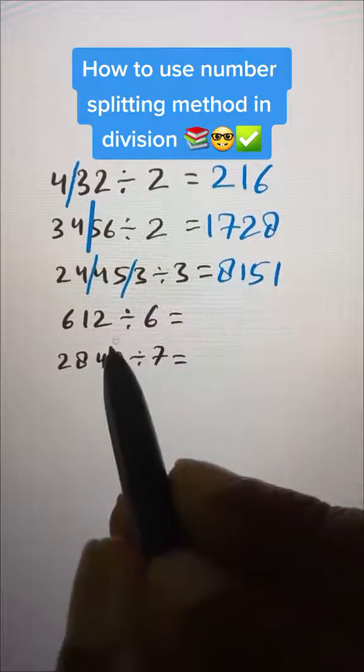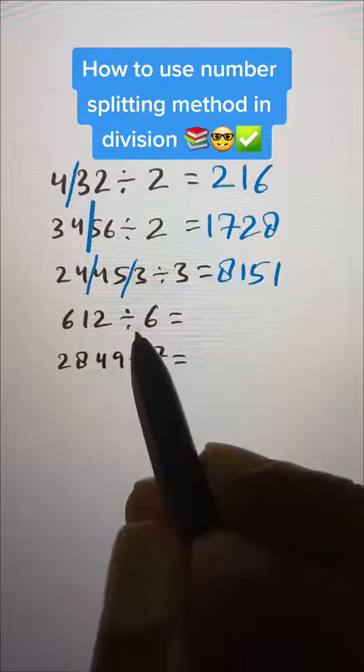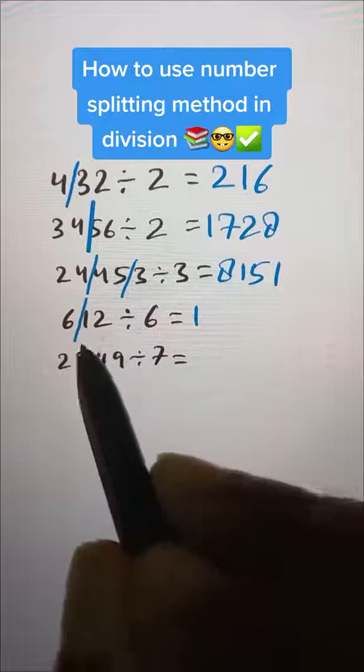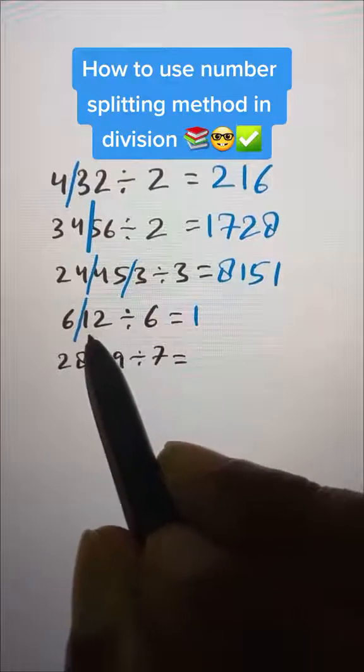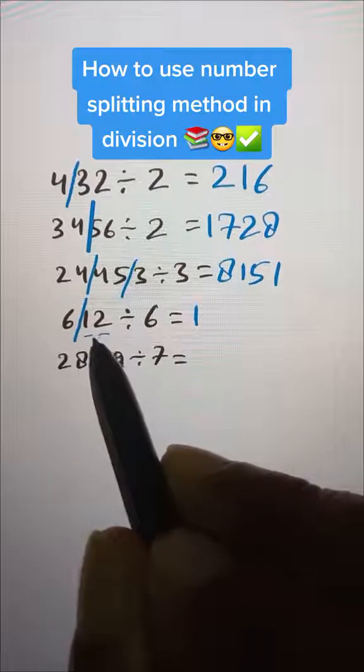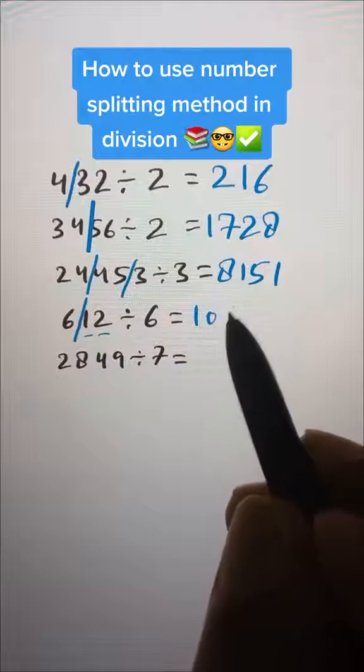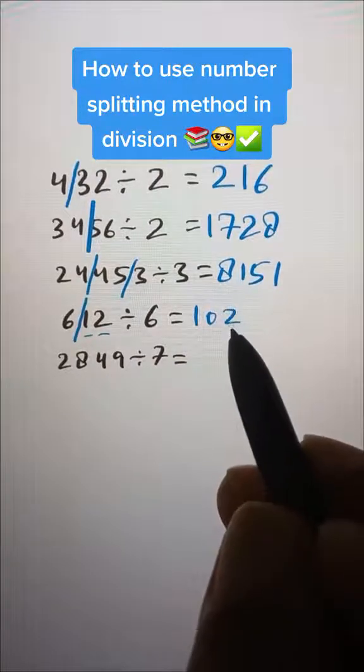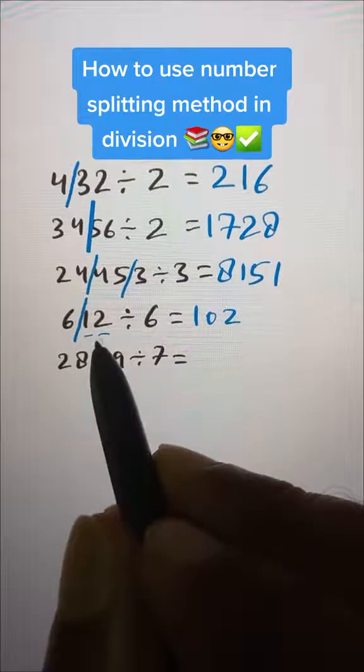Sometimes we have to use 0. If I split it here, 6 divided by 6 is 1, and 6 times 2 is 12. But here we have 2 digits, so we have to put 0 to adjust that: 102. And here if we split it here,